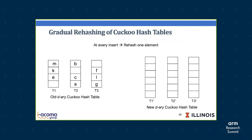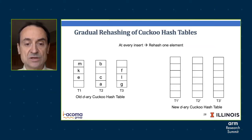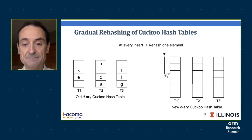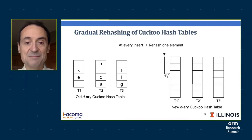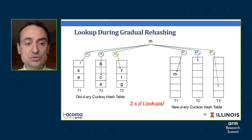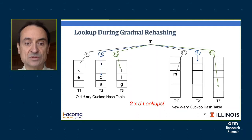Here is how gradual rehashing of cuckoo hash tables works. We started with a three-way hash table on the left that is getting filled, so we allocate a new cuckoo hash table for the same process that is twice as big. As the program runs, every time we insert an entry in the hash table, we rehash one element — for example, rehashing m from way t1 in the old table to the same way t1 prime in the new table. Unfortunately, a problem occurs when we do a lookup during gradual rehashing. Since we don't know if an entry has been moved or not, we would need 2d lookups — d lookups in the old hash table and d lookups in the new hash table — which is not good because it doubles the number of accesses.